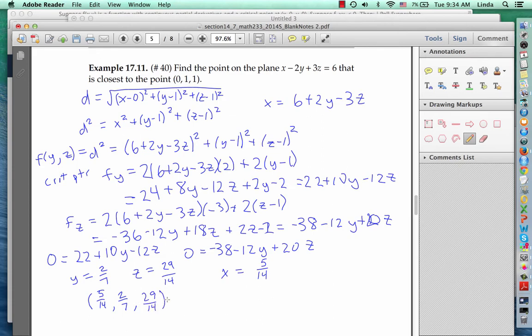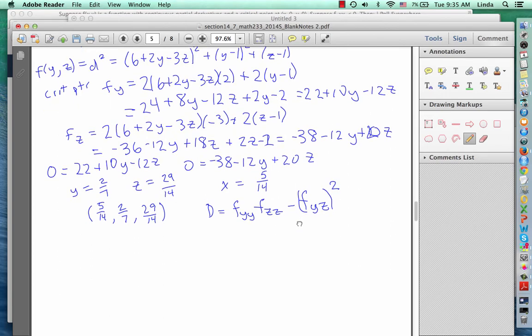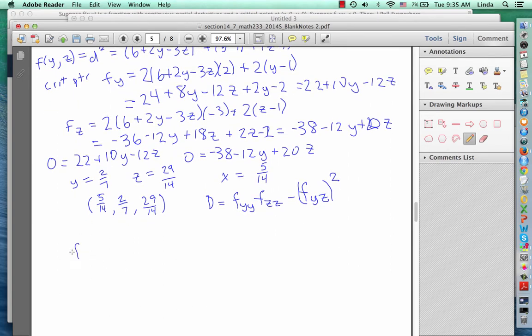Let's check that this critical point actually gives us a minimum by evaluating the discriminant, which in this case is f sub yy, f sub zz minus f sub yz squared. Since f sub yy is 10 and f sub zz is 20 and f sub yz is negative 12, we know that the discriminant is going to be 10 times 20 minus minus 12 squared, which is 56, which is greater than 0.